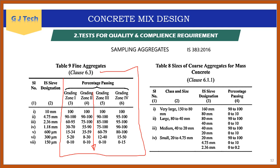Table 8 covers coarse aggregate for mass concrete, which has comparatively lower grades and uses larger aggregate sizes up to 150–80 mm. For such cases, aggregates are sieved from 160 mm, and passing percentages must comply with specified values. This compliance must be satisfied before aggregates are classified as suitable for concrete mix design.